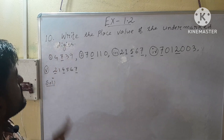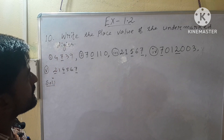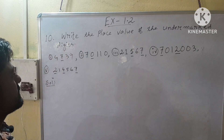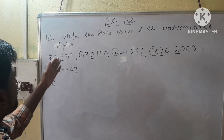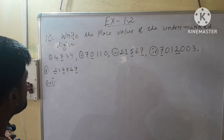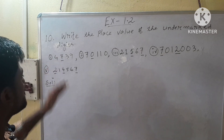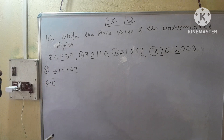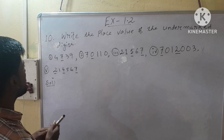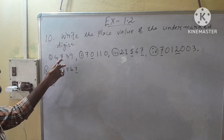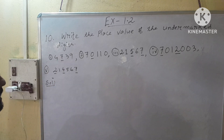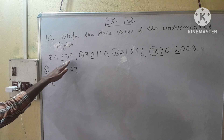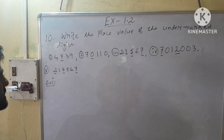Question number 10 is: write the place value of the undermarked digits. We have to find the place values of these undermarked digits. So roman number 1 — here we have 7 undermarked. So we have to find the place value of this 7.